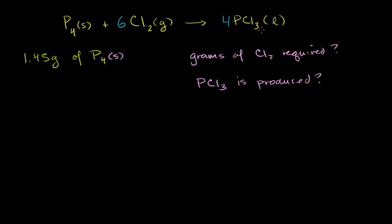Now that we have a balanced equation, we can get into the meat of the problem: figure out how many moles of phosphorus we're dealing with. Because once we know the moles, we can use the stoichiometric ratios — which is essentially saying, for every mole of phosphorus, I need six moles of chlorine, and for every mole of phosphorus, I'm going to produce four moles of phosphorus trichloride. So you want to get it all in terms of moles.